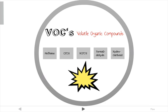Formaldehyde is the most widespread VOC and a major contributor of SBS. It's colorless, strong smelling, and usually released by particle board and foam insulation. Try to seek alternatives with lower VOCs — there are green products for fabric, carpeting, ceiling tiles, and other things that do have low VOC content.